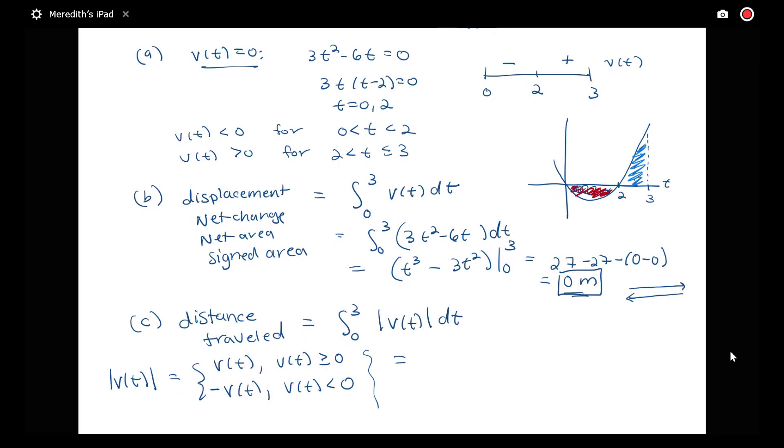We need to break this up at the point where the sign of our velocity changes. We'll have an integral from 0 to 2 of -v(t), since the absolute value of v(t) would be -v(t) in the interval from 0 to 2 where velocity is negative, plus an integral from 2 to 3 of v(t)dt.